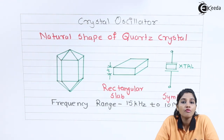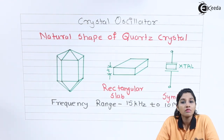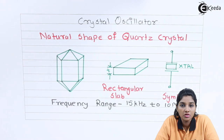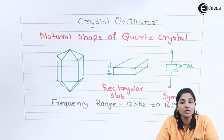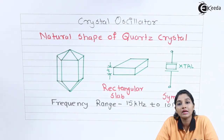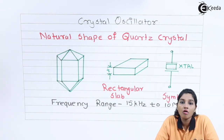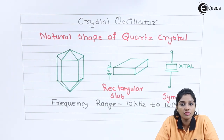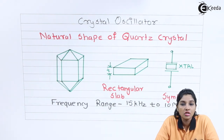Based on what type of cut we are using, the characteristics of the crystal oscillator also change. The various parameters affected by the cutting of the rectangular slab include temperature coefficient, frequency of oscillation, resonant frequency, and many more.